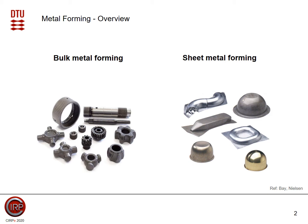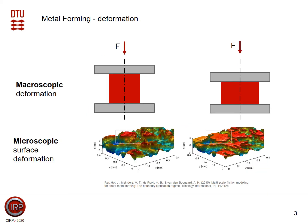But what happens if we deform them? There is a difference between the macroscopic deformation and the deformation at the microscopic level. For example, if we look at this rather simple upsetting of a cylinder, we see that we compress the cylinder — it gets a little bit wider but flatter. At the microscopic surface, at the beginning we have a rather rough surface where we see some peaks, which we call asperities, and where we see some valleys.